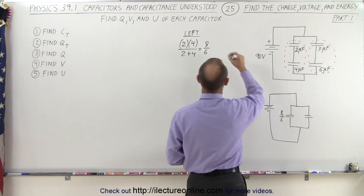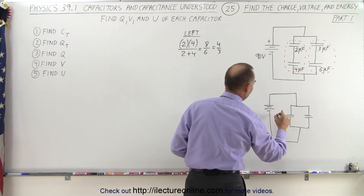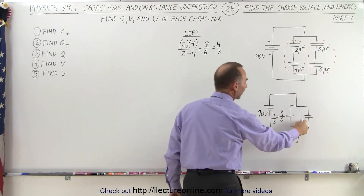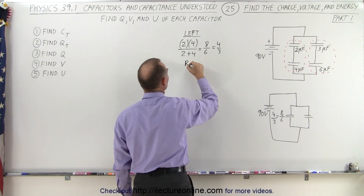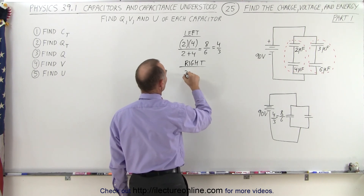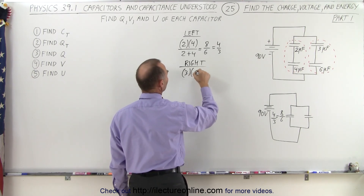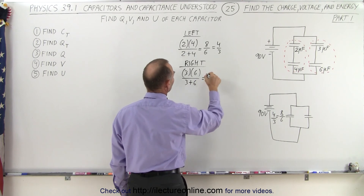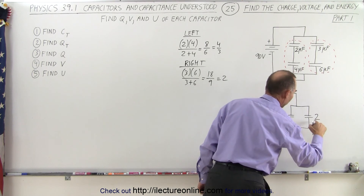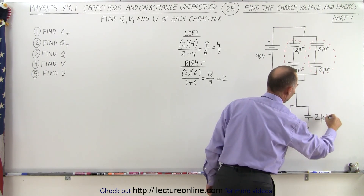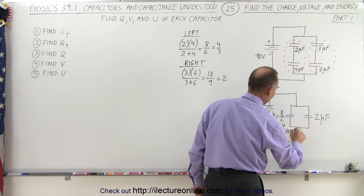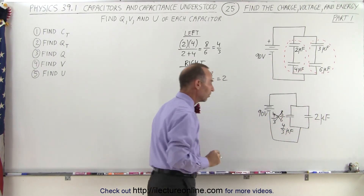That can be simplified to 4 over 3 microfarads. We still have a 90-volt source. On the right side, we'll use the product over the sum to find the equivalent capacitor on the right branch: 3 times 6 over 3 plus 6, that's equal to 18 over 9, which comes out to a nice even 2. So we have a 2-microfarad capacitor on the right side and a 4/3-microfarad capacitor on the left side.